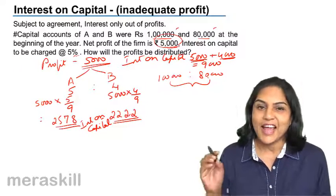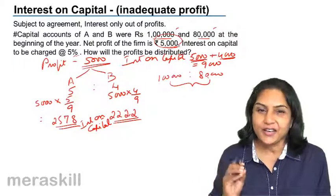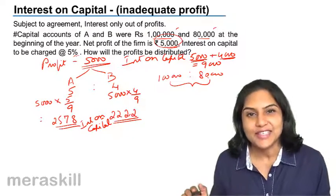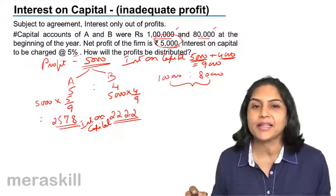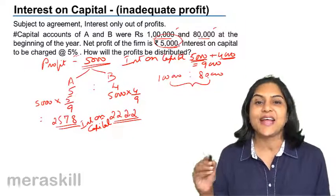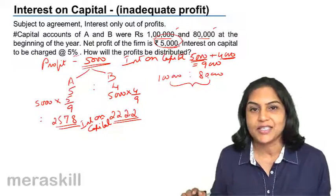So in summary, when inadequate profit exists and interest is payable on capital, the profit gets distributed to the partners in the ratio of the amount which is receivable by them for interest and salary.